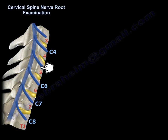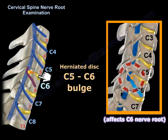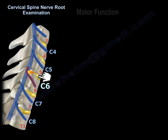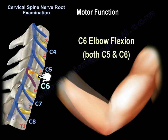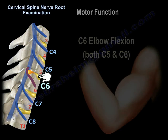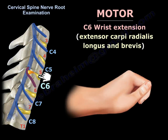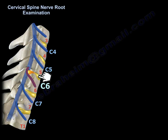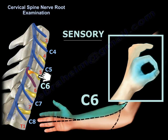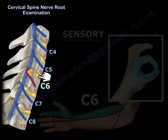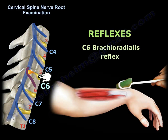A herniated disc between C5 and C6 will affect the C6 nerve root. The motor function is elbow flexion and wrist extension, involving the extensor carpi radialis longus and brevis. The C6 dermatome sensation is at the thumb and index finger. The brachioradialis reflex is C6.